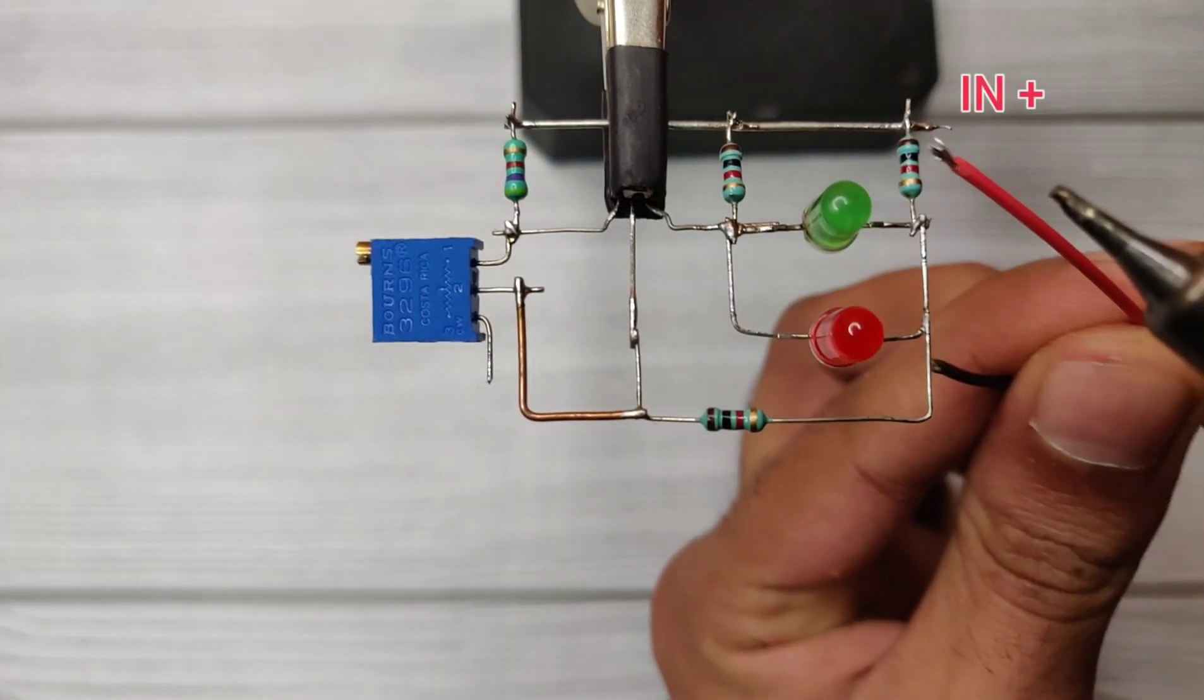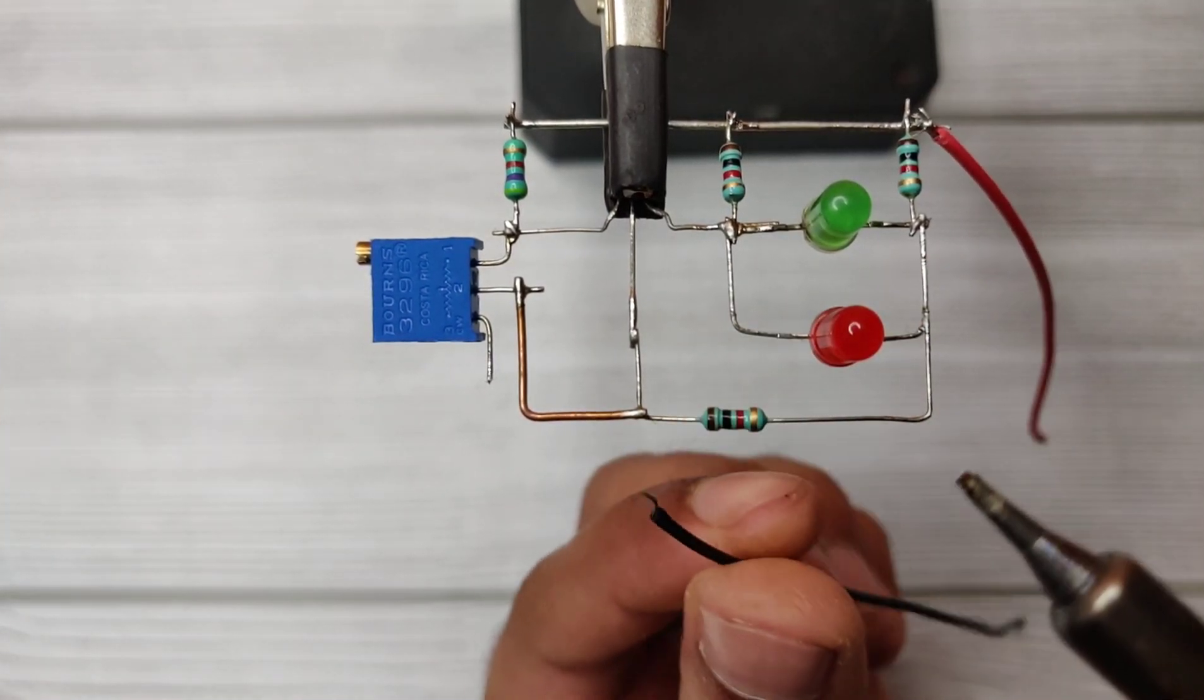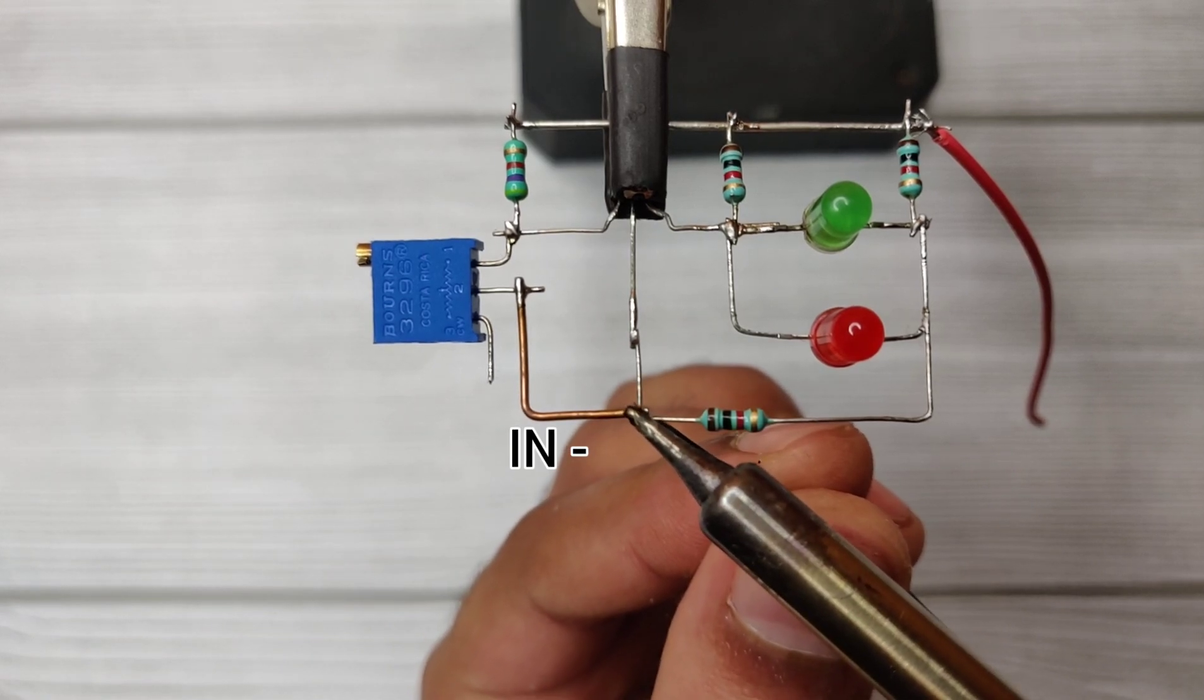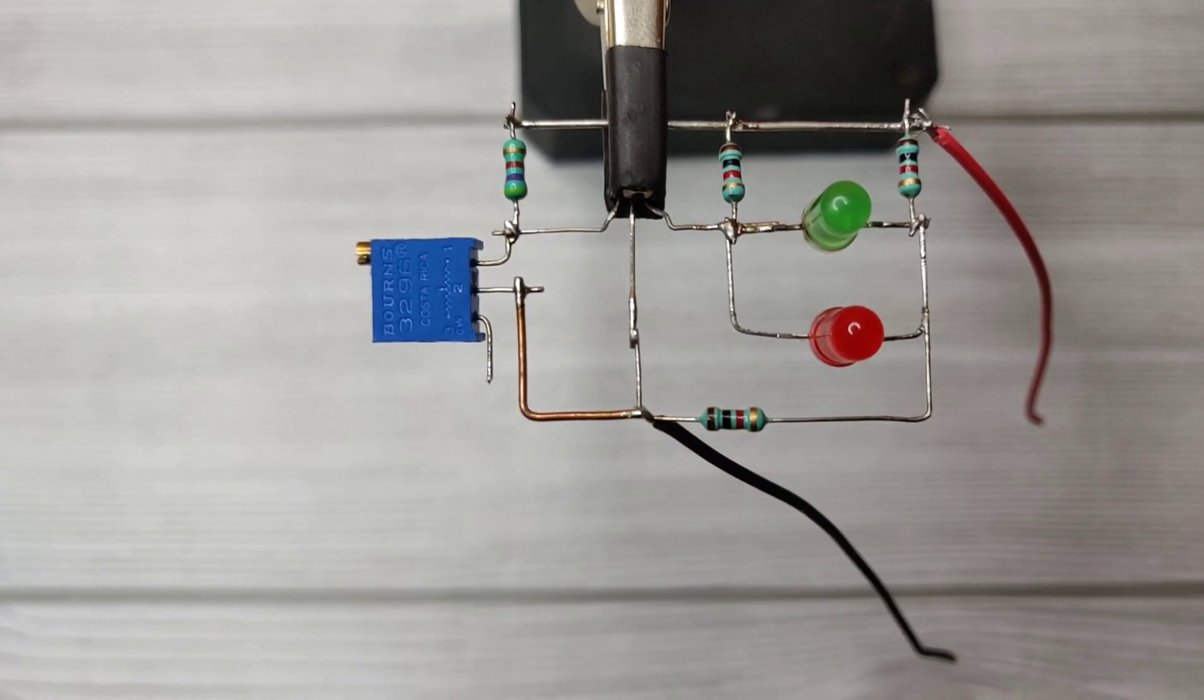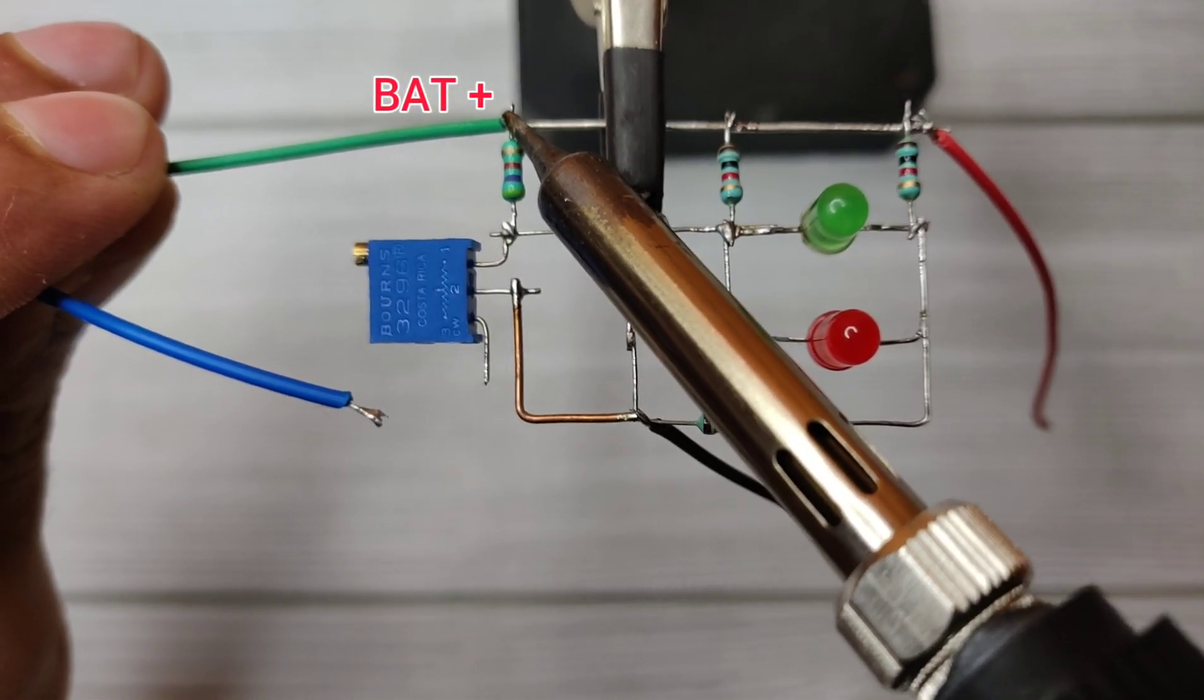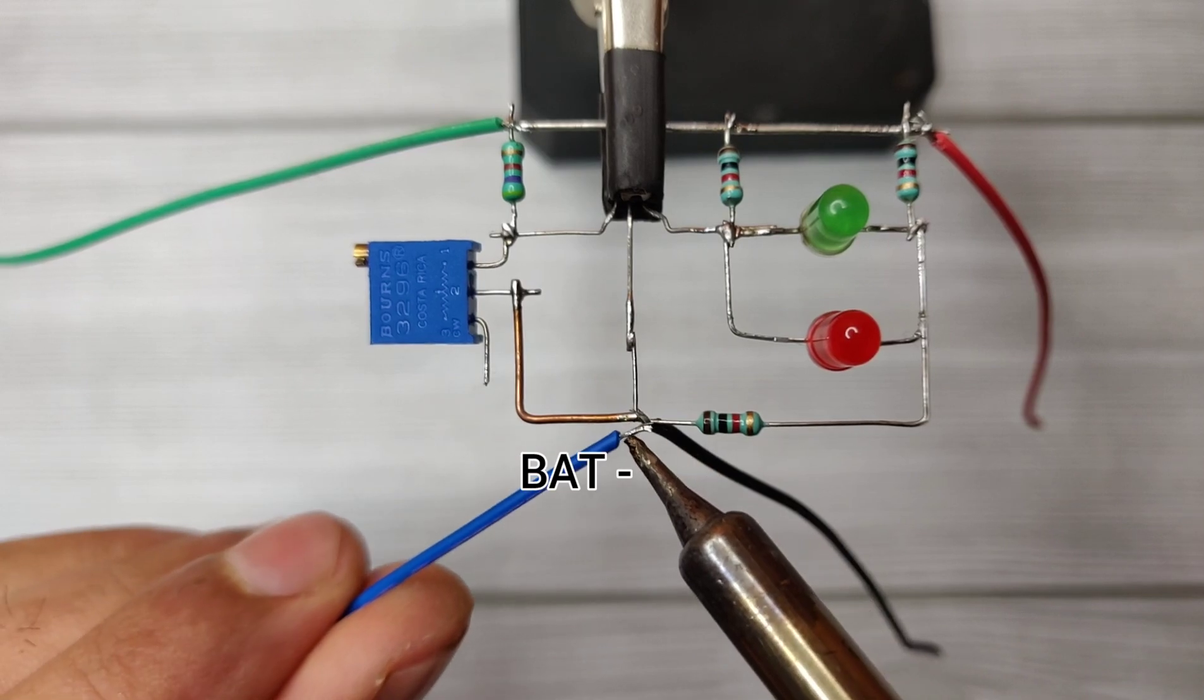Here is input DC positive, and here is input DC negative. Here is battery positive, and here is battery negative.